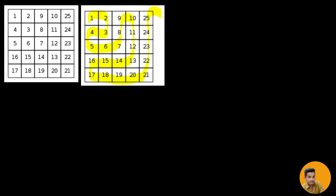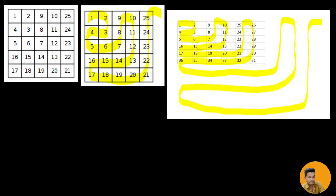If you follow this yellow line you can directly see a spiral like a snake. You start 1, 2, 3, 4, 5, 6, 7, 8, 9, 10, 13, 14, 15, then it goes like this, further going 25, 26, 27, 28, 29, 30, 31, 32, 33, 34, 36, 37, 38, 39, 40, 41 — and it will go on like this. So this is the number spiral.